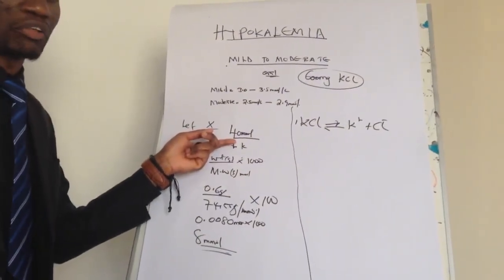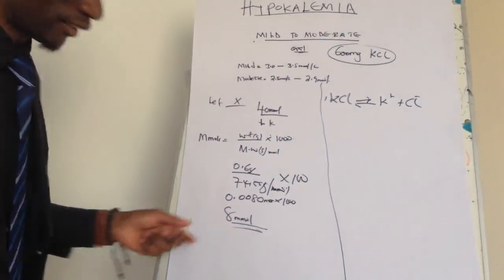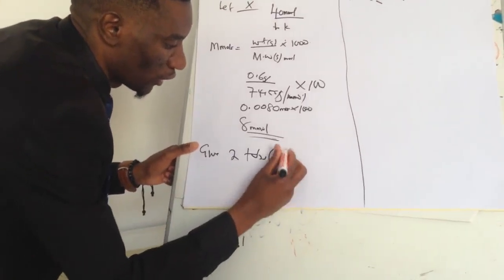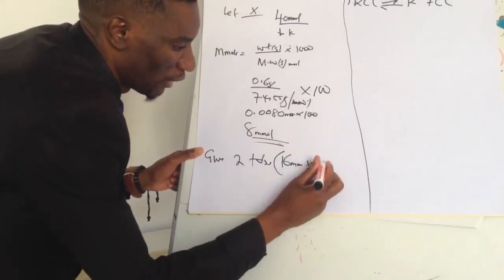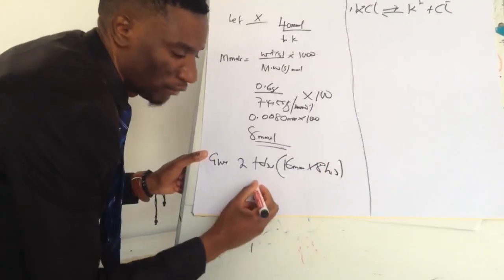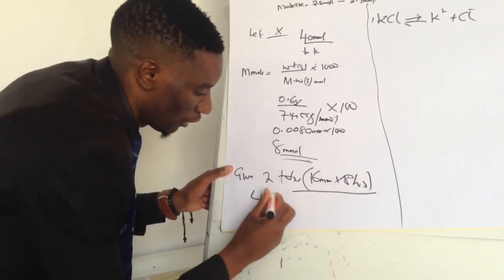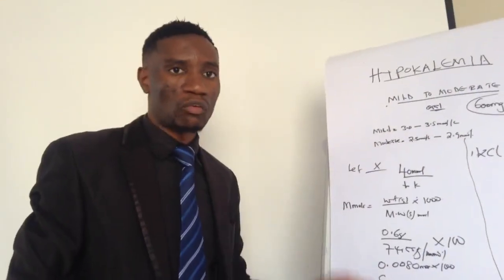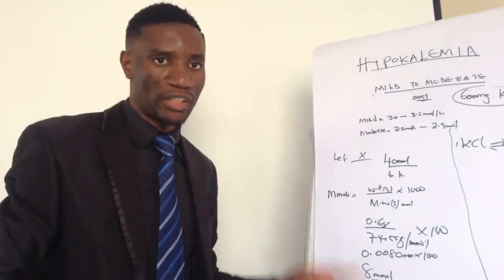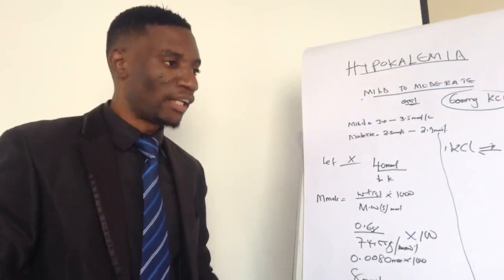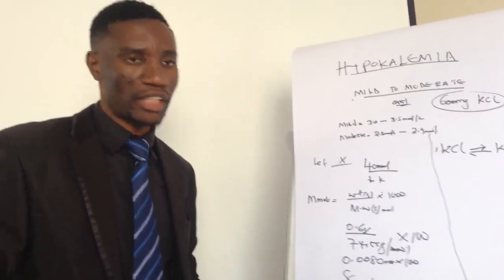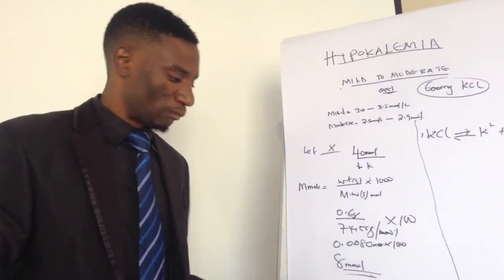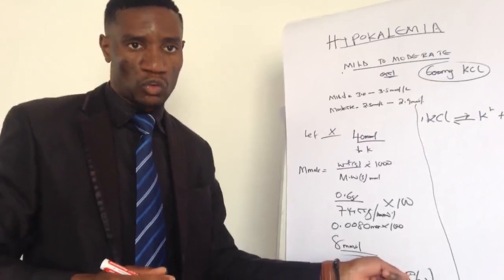The potassium deficit must be corrected within 24 hours. So you give the patient 2 tablets, which equals 16 millimoles, every 8 hours — that is, three times a day. Two tablets × 8 millimoles = 16 millimoles per dose; 16 × 3 = 48 millimoles in 24 hours, which corrects the patient's mild to moderate hypokalemia using oral tablets.